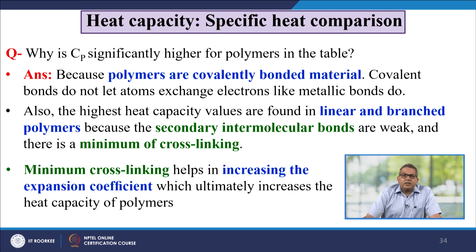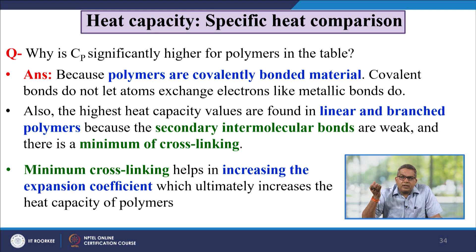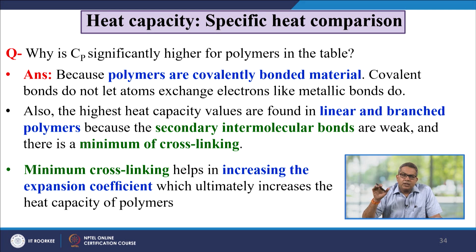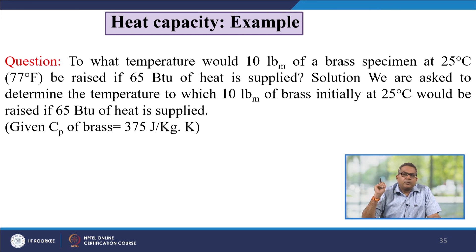Why is CP significantly higher for polymers? Polymers are covalently bonded materials, and covalent bonds do not let atoms exchange electrons like metallic bonds do. The highest heat capacity values are found in linear and branched polymers because the secondary intermolecular bonds are weak and there is a minimum of cross-linking. Minimum cross-linking helps in increasing the expansion coefficient, which ultimately increases the heat capacity of polymers.